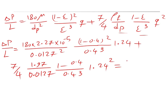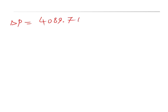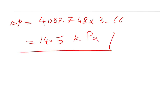The result is ΔP/L = 4089.748 Pa/m. Since the bed length is 3.66 m, the total pressure drop is ΔP = 4089.748 × 3.66 = 14.5 kPa. That is the solution to this question. I hope you found this video helpful. Feel free to subscribe to this channel to get updates when I upload new videos. Thank you.